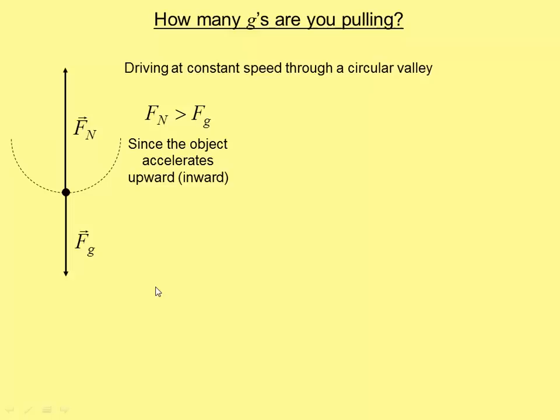And the only way your net force and acceleration can be upward is if the normal force is bigger than the force of gravity. So right now, before we even calculate anything, we should expect that our number of g's is bigger than one. You are pulling more than one g right now, and you will feel heavier through the valley. If we had done this going over a hill, then the normal force would be smaller than the force of gravity, and you would get less than one g. But I'm only going to do one example here.